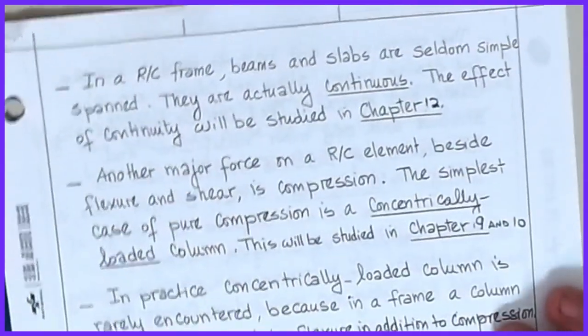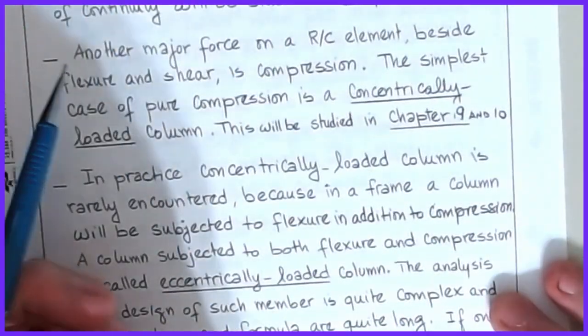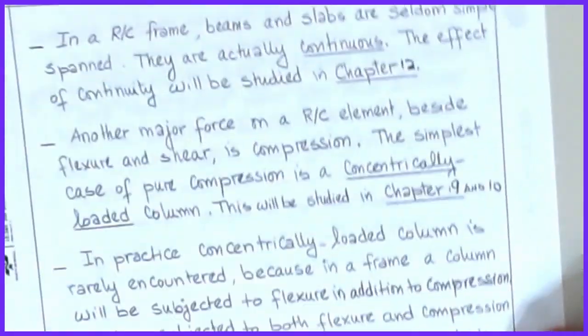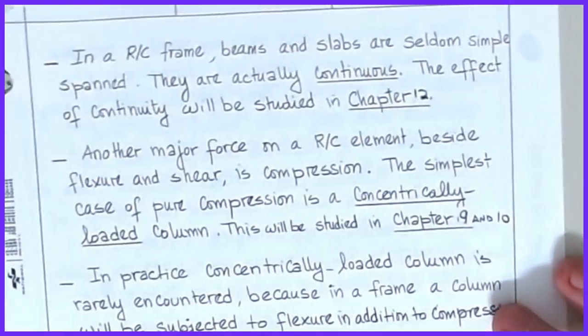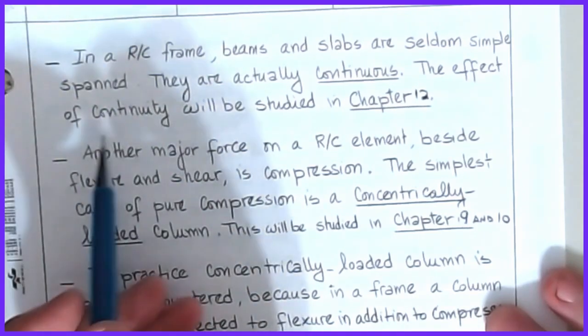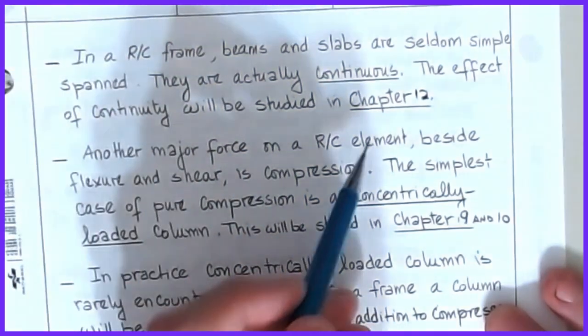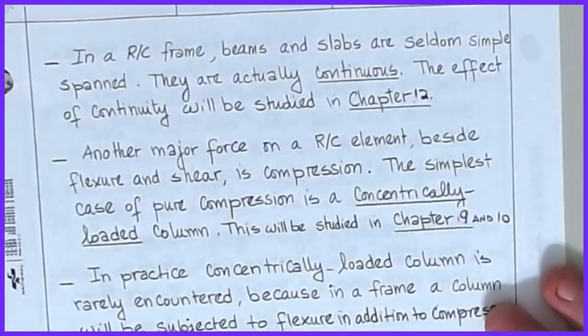Once we get past that, in an RC frame, beams and slabs are seldom simply supported — they're actually continuous. So we'll be looking at some of the effects of continuity in chapter 12.